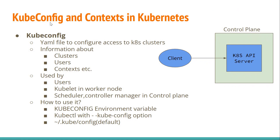What is the information present in the kubeconfig file? The kubeconfig file contains information about the clusters — that means the cluster API server URL and the certificate authority data of the cluster. It also contains user data with corresponding client certificates or service account tokens. Additionally it contains information about the context, which we will discuss in the next slide.